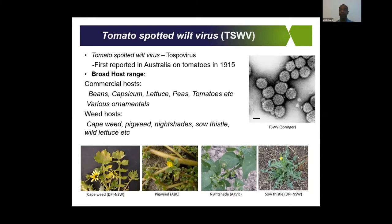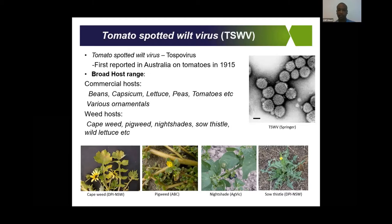Tomato spotted wilt is very important because of its broad host range. It can infect more than 2,000 species of plants, including commercial hosts such as beans, capsicum, lettuce, peas, and tomatoes, as well as many ornamentals. It's also found in many weeds across Australia such as Capeweed, Bigweed, Natsedge, Sowthistle, and Wild Lettuce, and most of these weeds act as an alternative source for the virus.